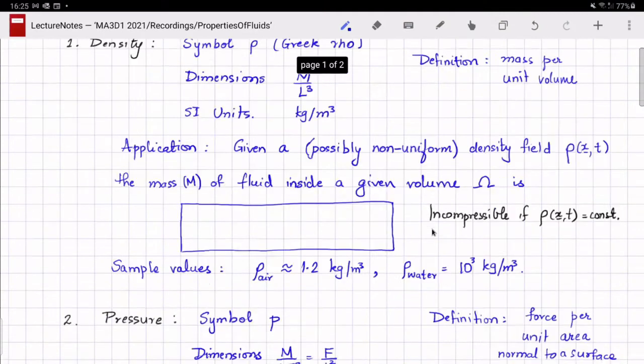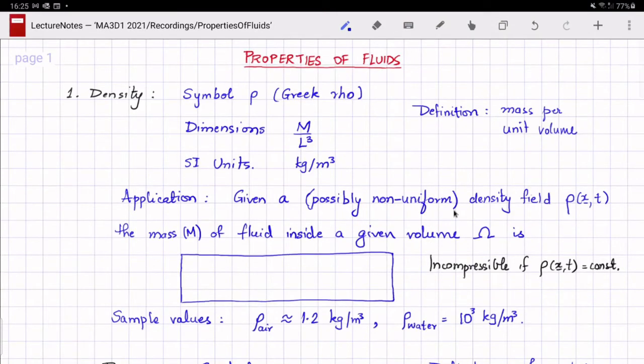The first one is the density, the fluid density denoted by the Greek symbol rho. It is defined as the mass of the fluid per unit volume and it has dimensions of mass per length cubed and SI units of kgs per meter cubed.